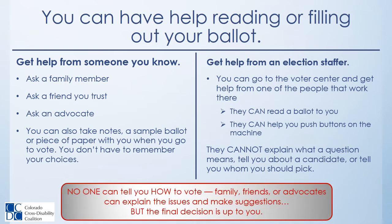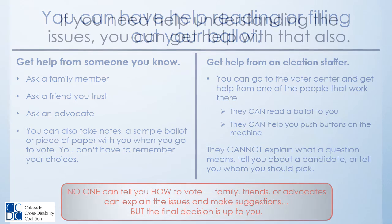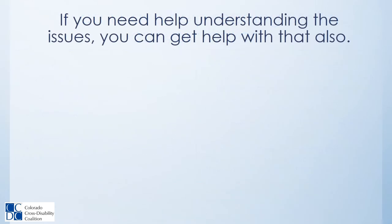No one can tell you how to vote. Family, friends, or advocates can explain the issues and make suggestions, but the final decision is up to you. If you need help understanding the issues, you can get help with that also — talk to a friend or family member, or talk to an advocacy organization.